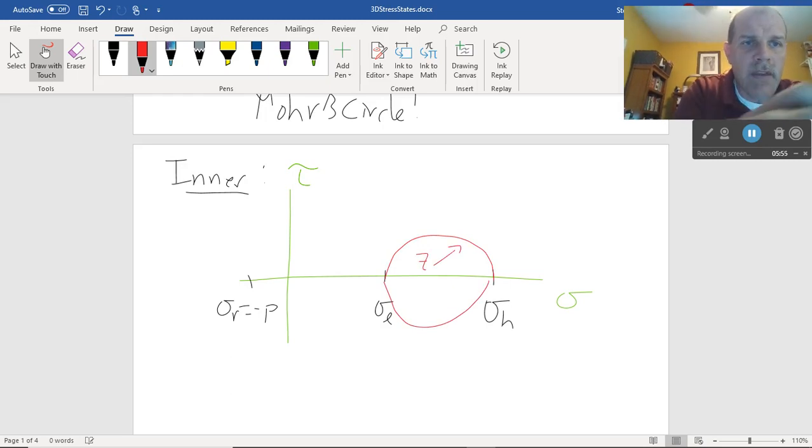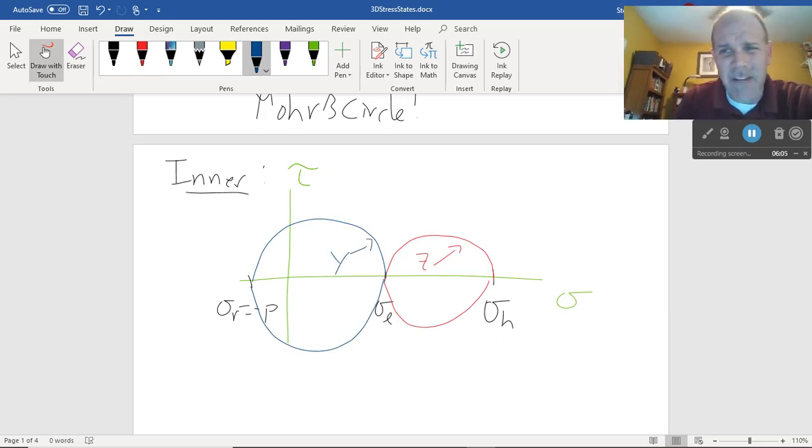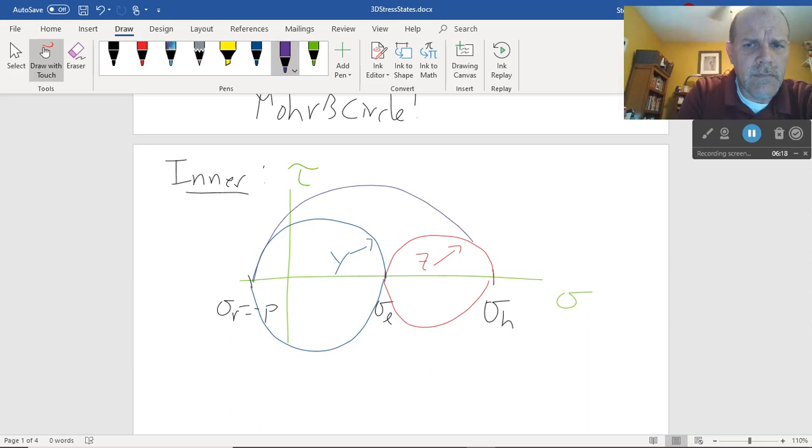But now I've got sigma r equal to negative p sitting over here. And that's a ringer. Because sure, I can rotate about the z-axis and I honestly get exactly the same Mohr circle. I can rotate about the x-axis and I get a slightly different Mohr circle. If I rotate about the x, that's where things start getting a little funky. I think you'd agree this is where tau max lives. It's again the radius of the largest Mohr circle.